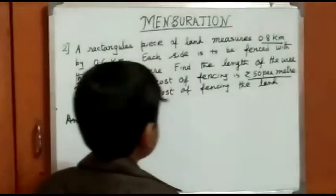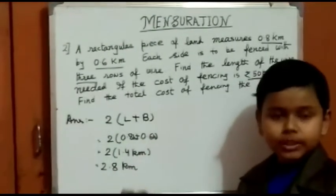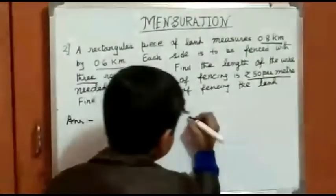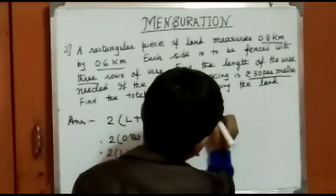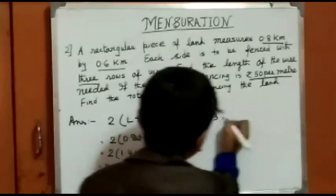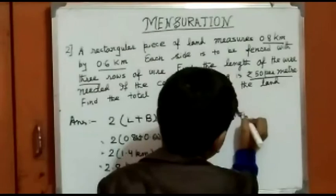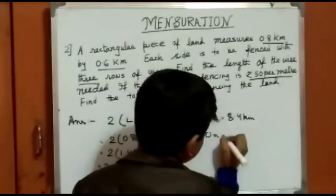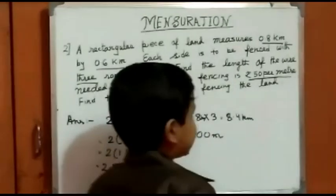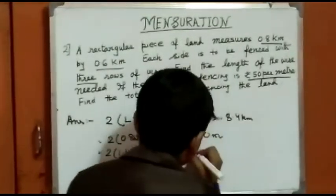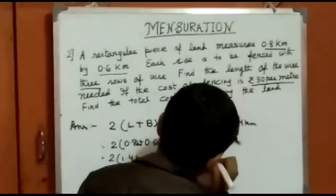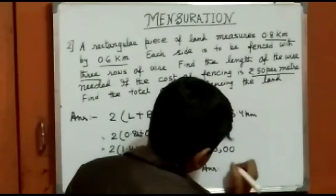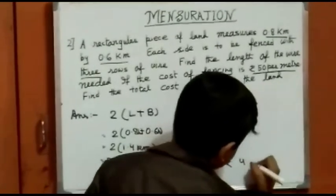Now here it is in meter and this is in km, so we need to convert it. So first of all let us multiply it by 3. 2.8 multiplied by 3 gives us 8.4 km, and conversion will give us 8,400 meters. So 8,400 meters multiplied by Rs 50 results in Rs 4,20,000. So our answer is Rs 4,20,000.